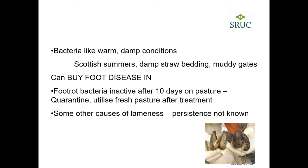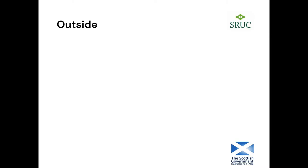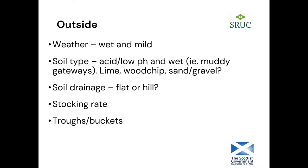There are other causes of lameness for which we don't know how long the organisms persist in the environment. Things that make life worse include wet and mild weather, fairly acidic or low-pH soil areas, muddy gateways — some people use lime, wood chip, or sand and gravel in that problematic gateway space — poor soil drainage, high stocking rates, and troughs and buckets that leak or can't be moved to prevent churned-up ground.